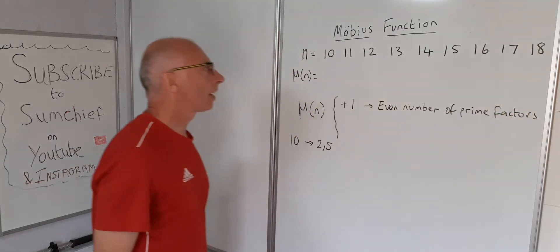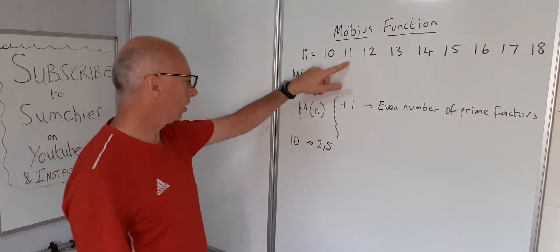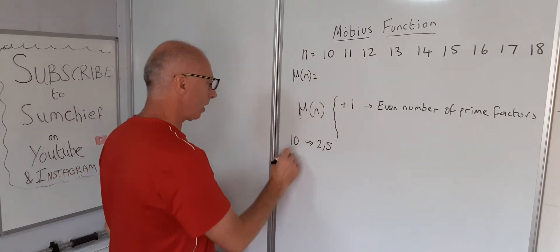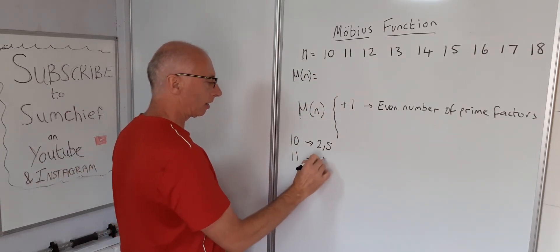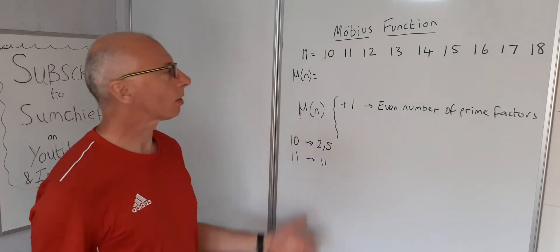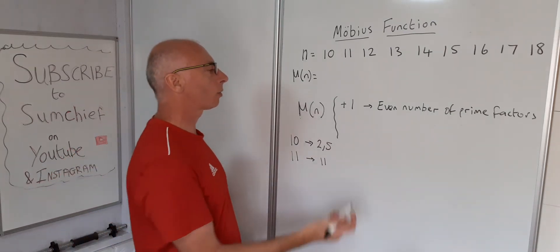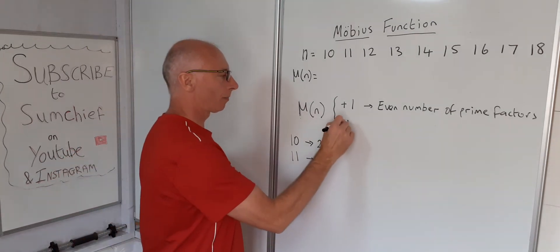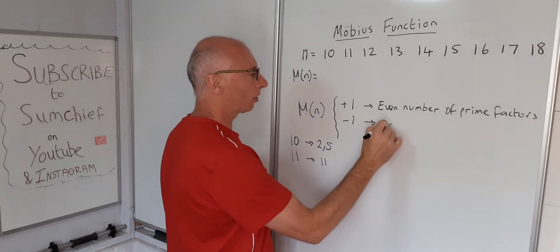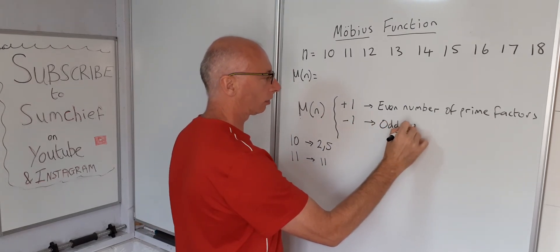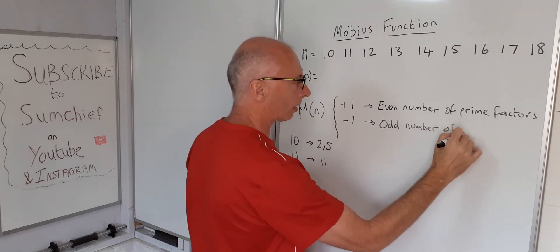If we take the next number, 11 — the prime factor of that is just 11 itself, so it's a prime number. Therefore that will take the value of minus 1. So mu of n equals minus 1 when there is an odd number of prime factors.